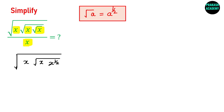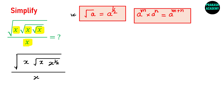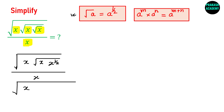This is divided by x. The next rule is: if you have a raised to the power m times a raised to the power n, this can be written as a raised to the power m plus n. Applying that, the inner part becomes x raised to the power 1 plus 1 by 2, which equals 3 by 2. So this is x raised to the power 3 by 2.